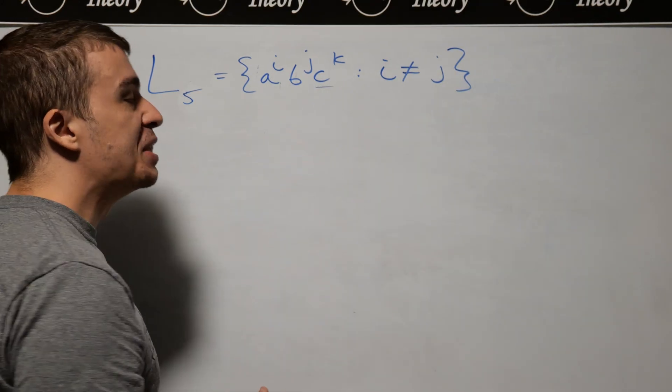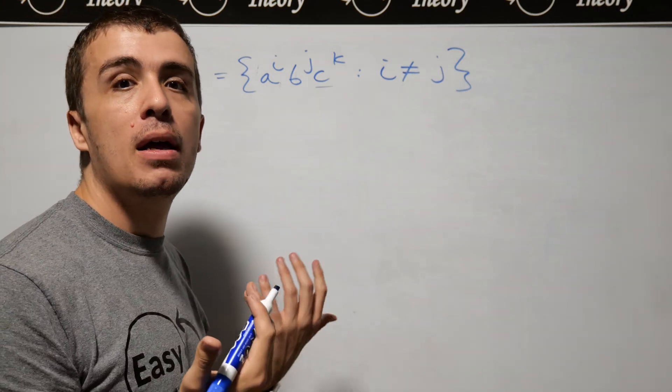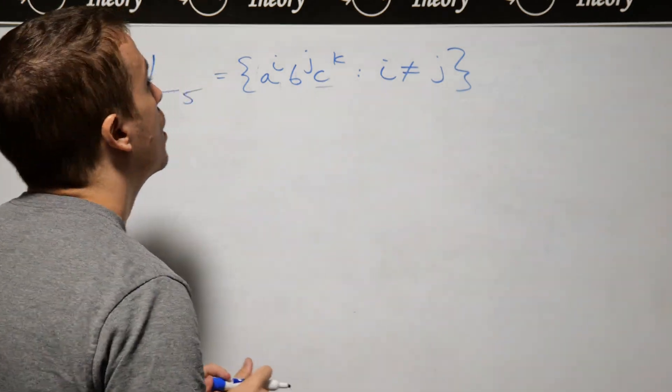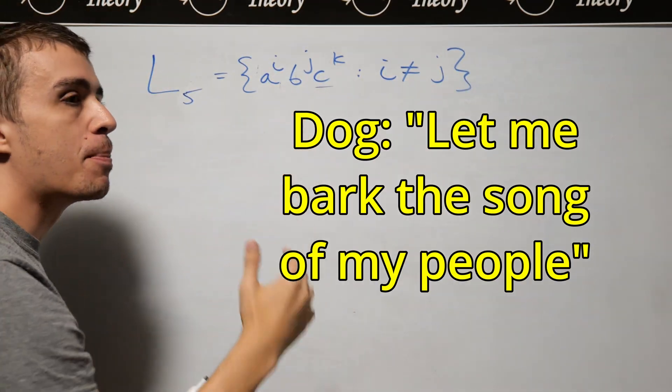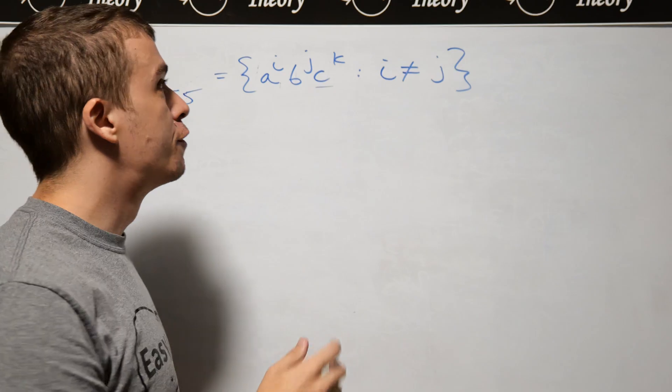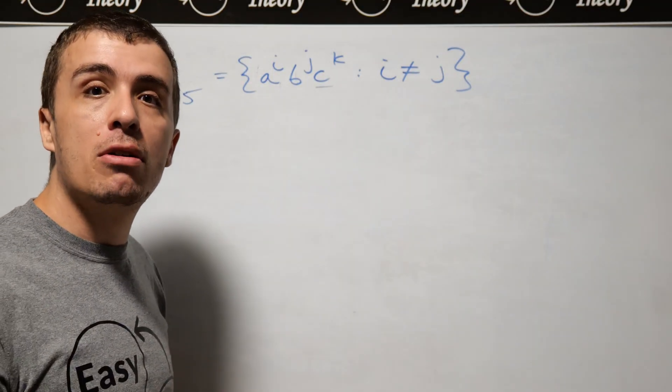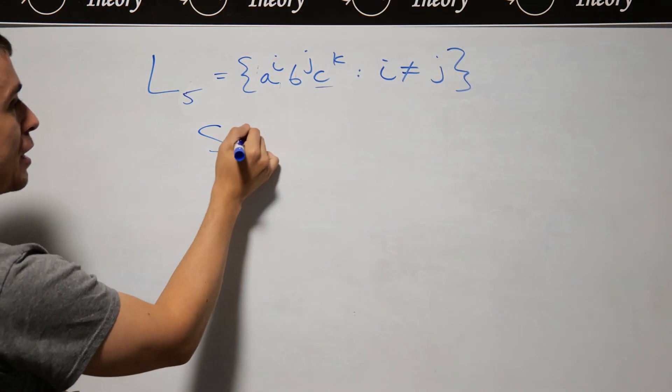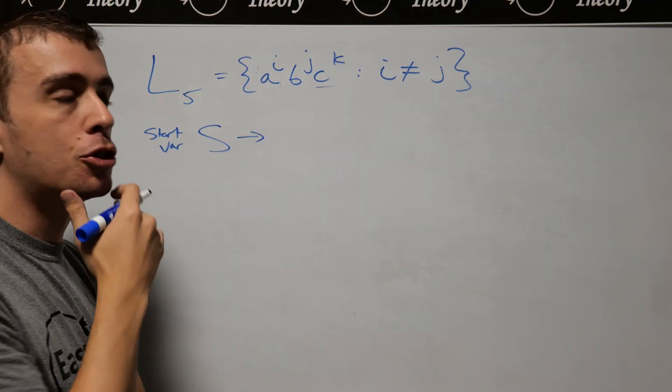Notice that the number of C's (k) has no relation to the number of A's or B's (i and j). So we can forget about the C's and just focus on the A and B part, then deal with the C's later. Every context-free grammar has a start variable, so let's make a start variable here. Let's think about how we're going to structure this.